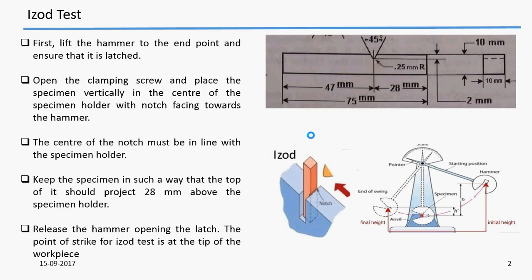Before testing the sample, we have to lift the hammer to the end point as shown in the figure and latch it. Then we open the clamping screw and place the specimen vertically in the center of the specimen holder with the notch facing towards the hammer.